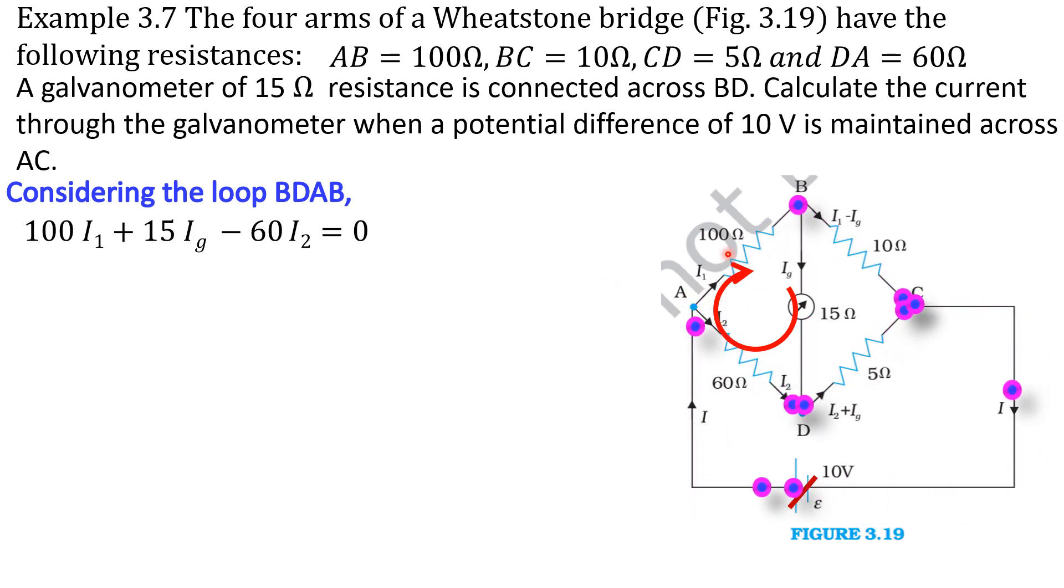So the equation begins: 100I1 plus 15IG minus 60I2. Dividing this equation by 5, we get 20I1 plus 3IG minus 12I2 is equal to 0. Let us consider this is equation 1.